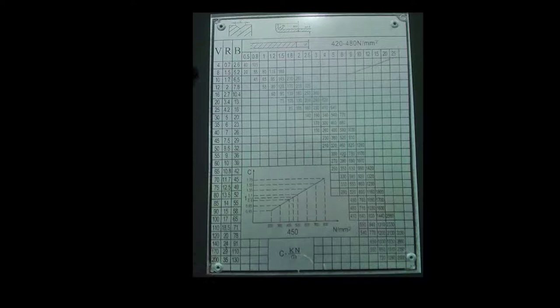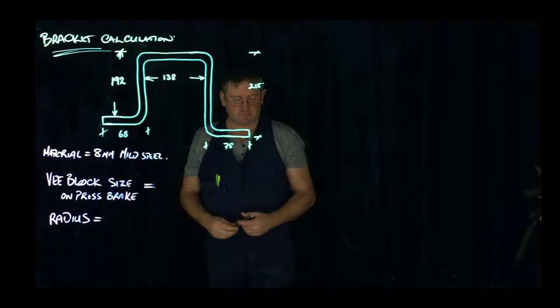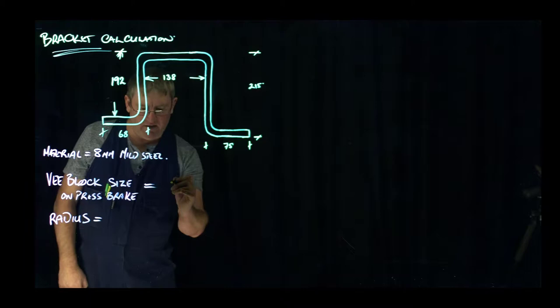You determine your V size, and that will tell you what size radius that you actually need. So we've determined that the V-block size is 65mm, and we determined off the chart that the radius was 10.8mm.